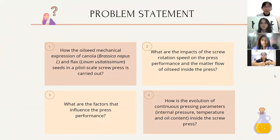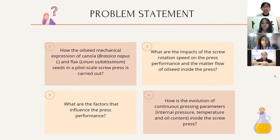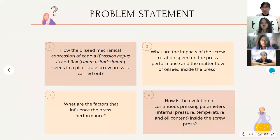Now continuing with the problem statement. In this experiment, we want to know how the oil seed mechanical expression of canola and flax seeds in a pilot-scale screw press is carried out. Also, what are the impacts of the screw rotation speed on the press performance and the material flow of the oil seed inside the press? We are also going to find out the factors that influence press performance, and how the evolution of continuous pressing parameters such as internal pressure, temperature, and oil content inside the screw press behave.